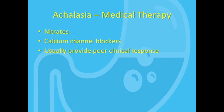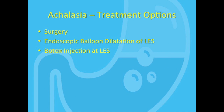So the three main therapies for achalasia are surgical Heller myotomy, endoscopic balloon dilation, and Botox injection. How do you decide what therapy to use for a particular patient? Treatment has to be individualized. The medical literature provides some guidance — essentially, the treatment decision depends on what type of achalasia a patient has based on the Chicago classification, their age, gender, and comorbidities.